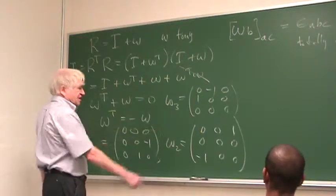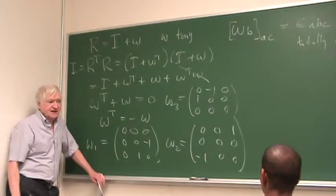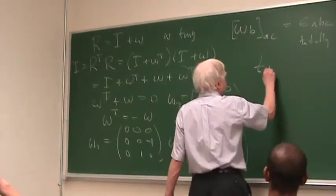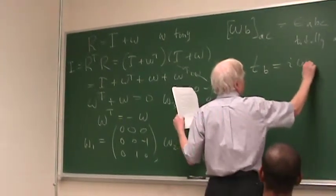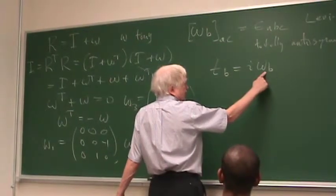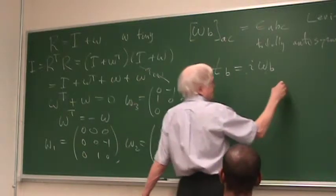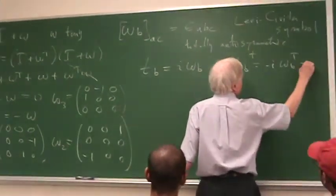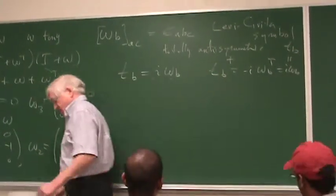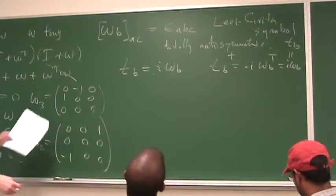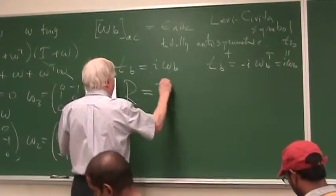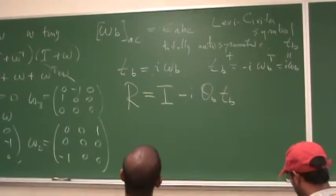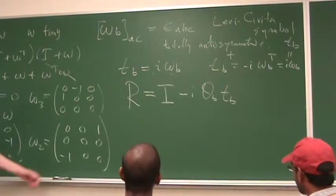These omegas are anti-Hermitian. And the mathematicians live with that. And I think they're more sensible. In the physics notation, we insist on things being Hermitian to be physical. And so we write this as I omega_B. These guys are anti-Hermitian and real. The T's, then, are imaginary and anti-symmetric. So T_B dagger is minus I omega_B transpose, which is I omega_B, which is T_B. So the T's are Hermitian. And we're going to write the rotation matrix as I minus I theta_B T_B summed over B from 1 to 3.